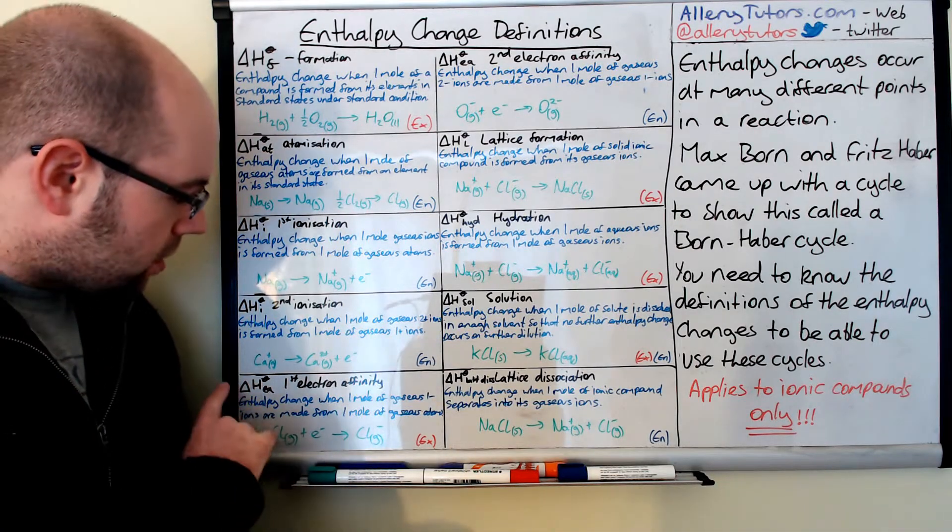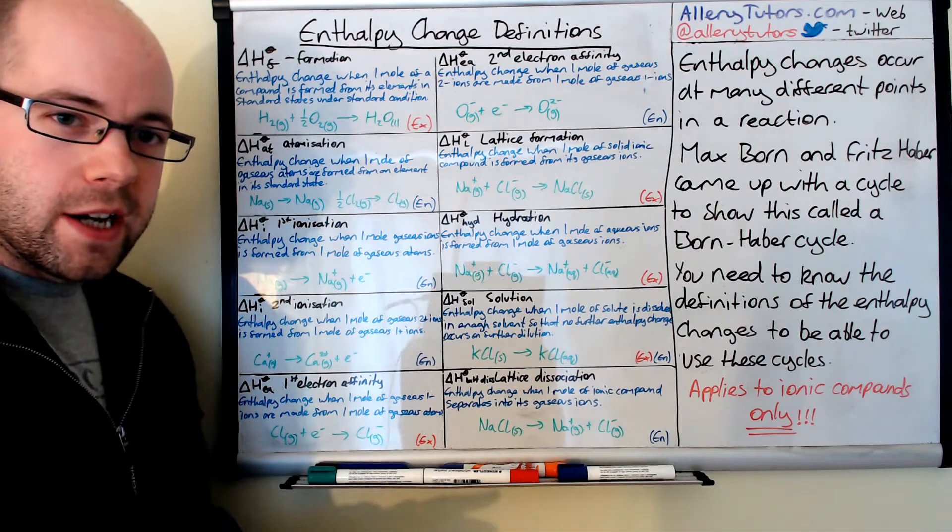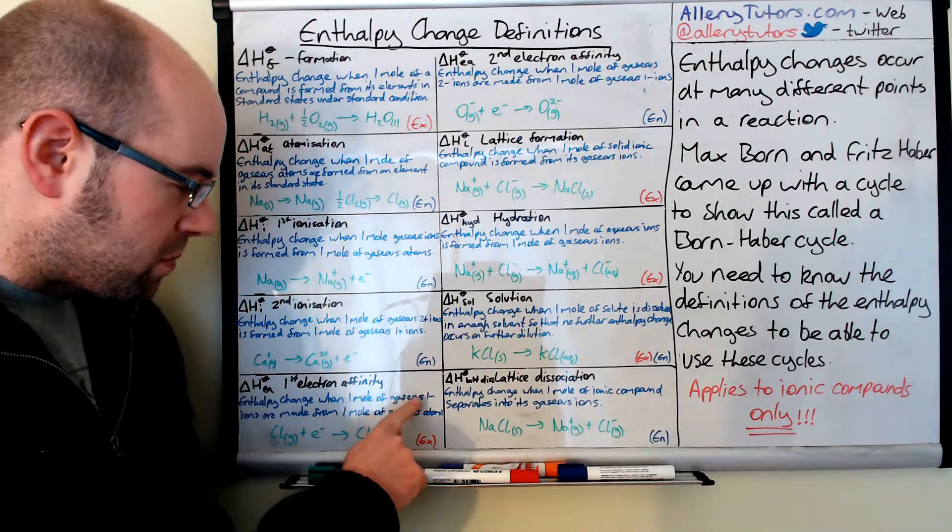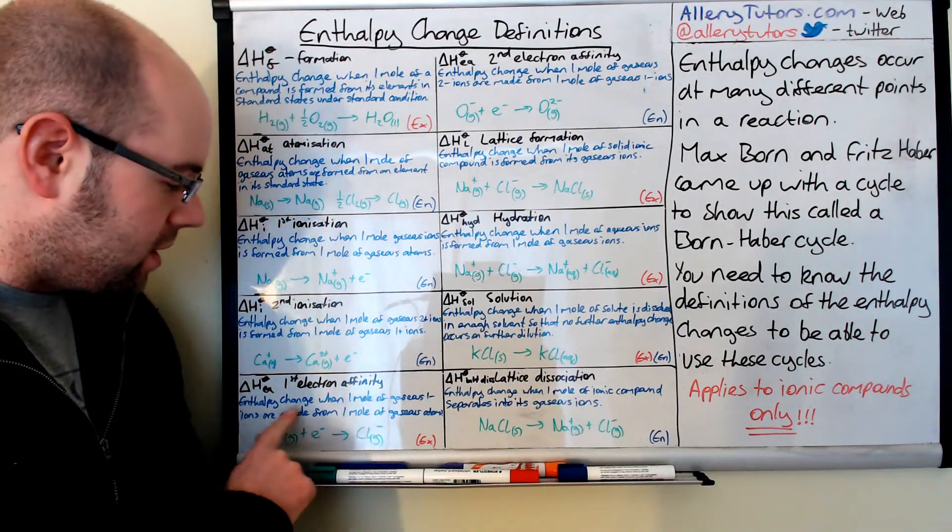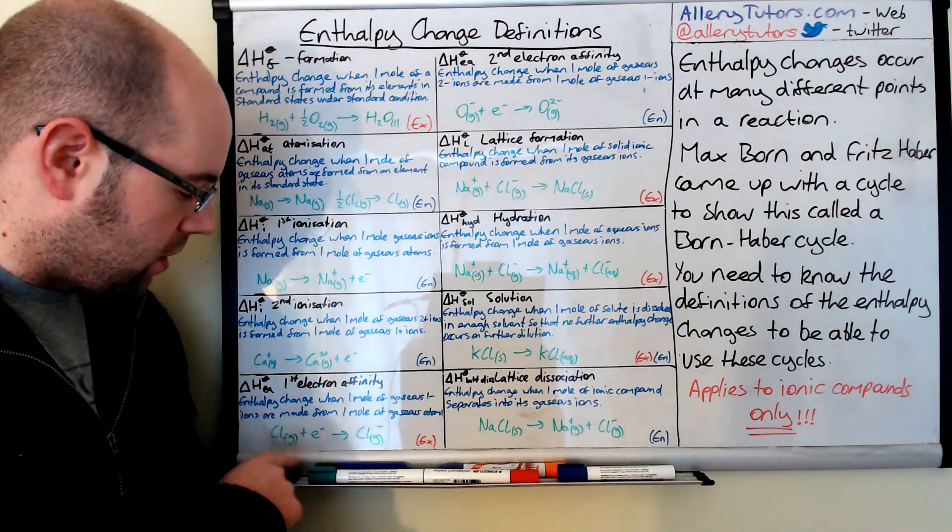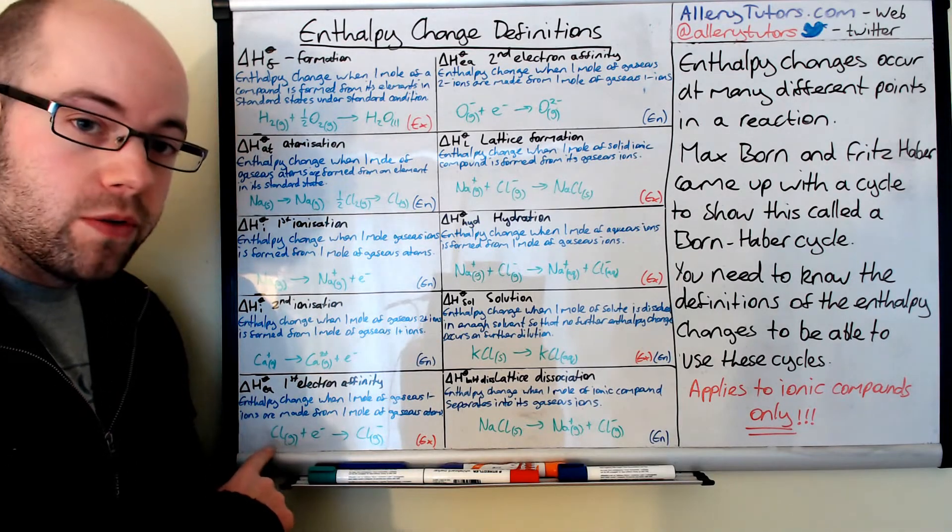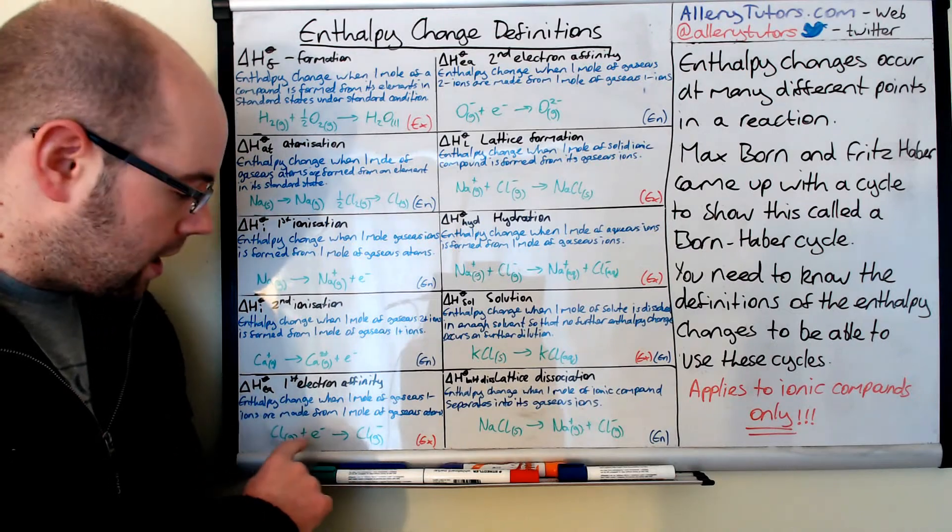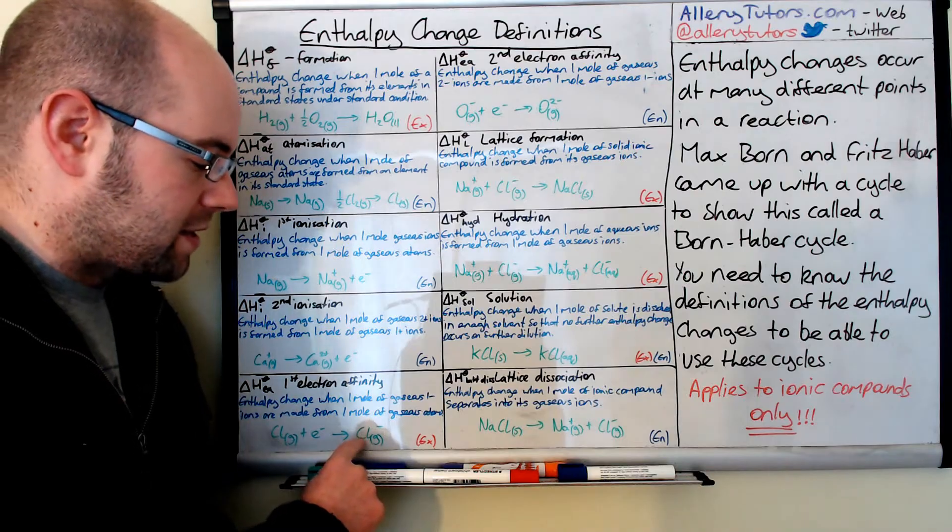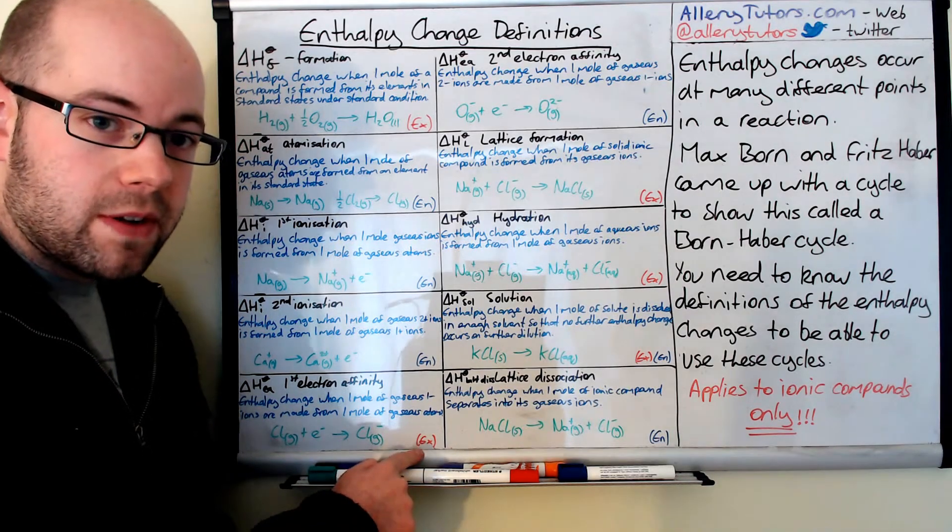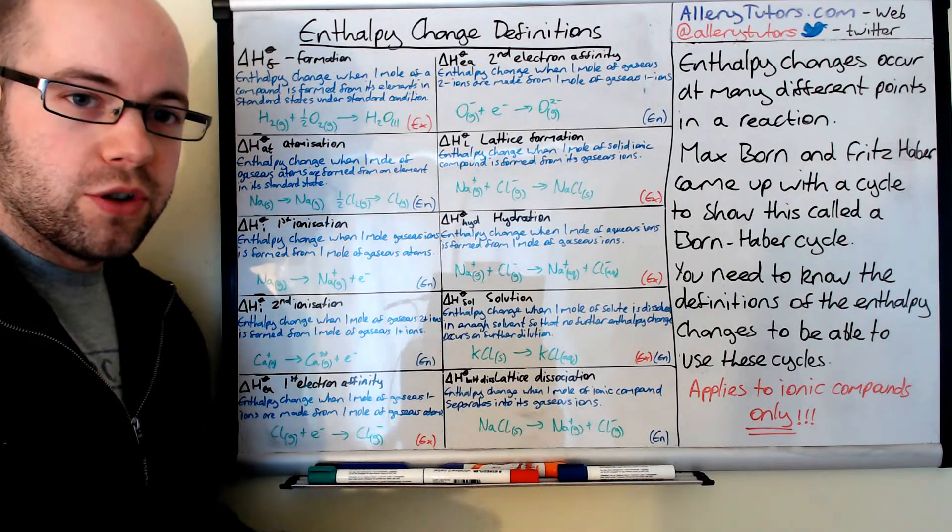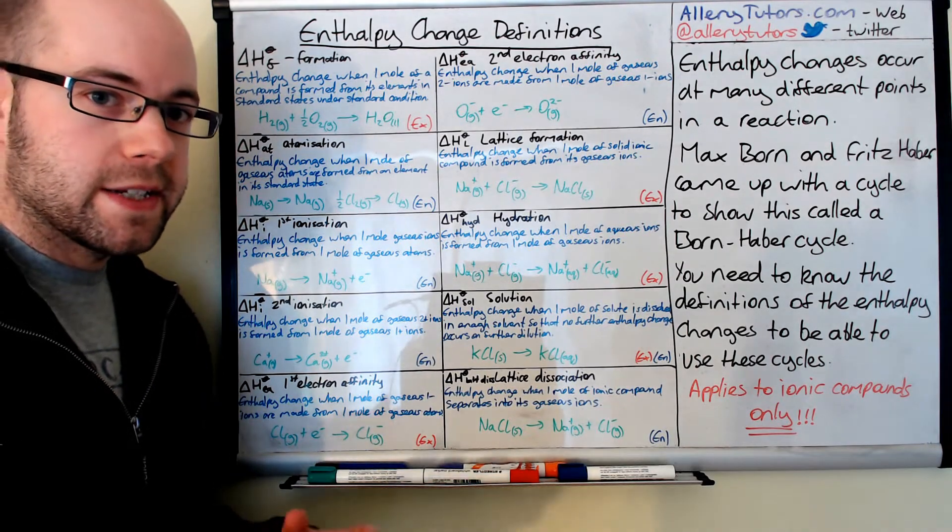The next one is electron affinity. If you affinitize something, it means you are attracted to it. This is the enthalpy change when one mole of gaseous one minus ions are made from one mole of gaseous atoms. We're starting from chlorine gas in the gaseous state. We're adding an electron to this, which forms Cl minus gas. This is an exothermic reaction because we are adding an electron to a neutral atom. Energy is normally given out because we're affinitizing an electron.